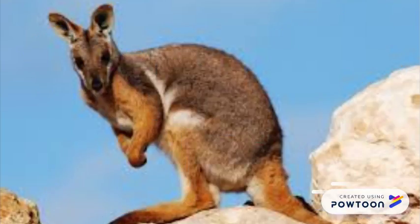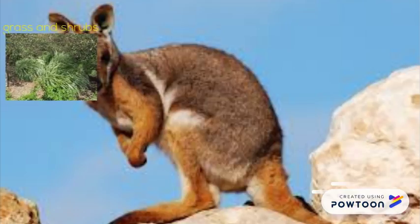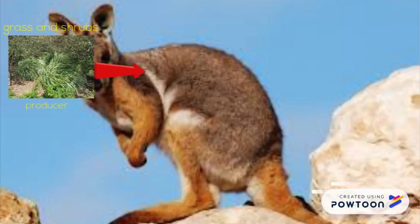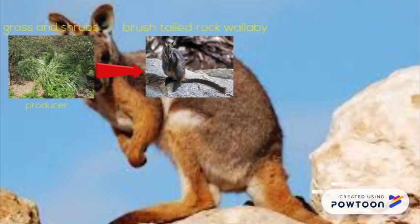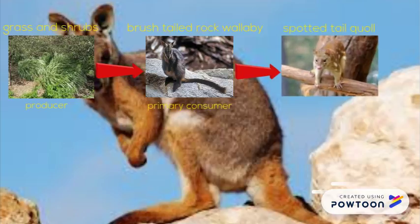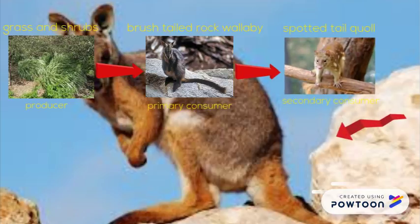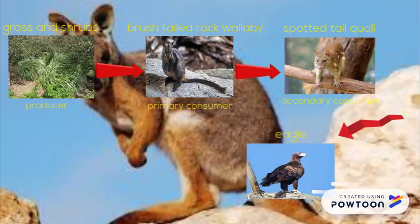One of the wallaby's food chains consists of grass and shrubs as the producer, the brush-tailed rock wallaby, the spotted-tailed quoll, and the eagle as the tertiary consumer.